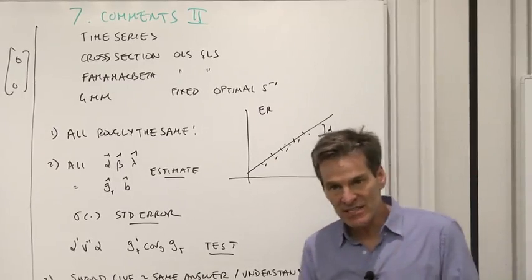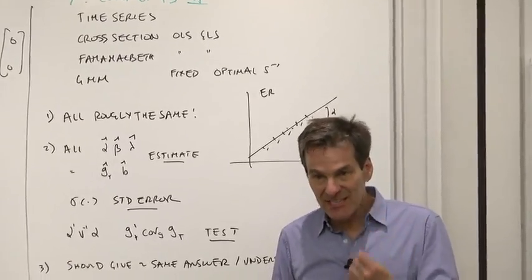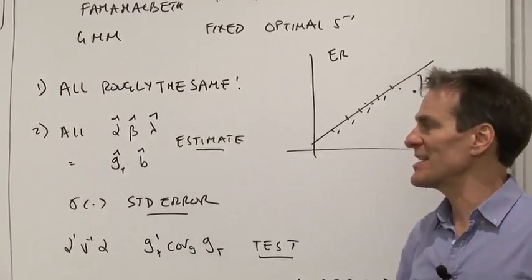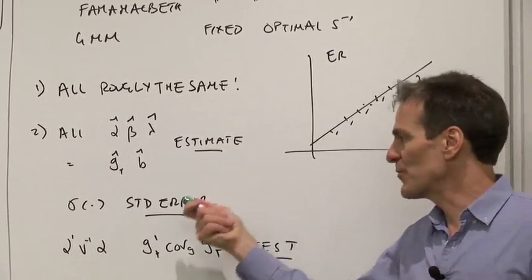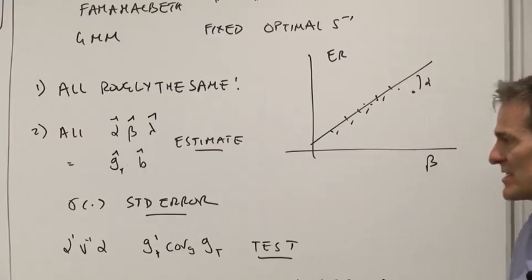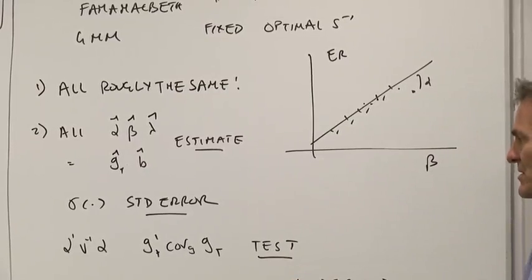In each case, we went through the standard statistical methodology. How do you produce your estimates? How do you produce formulas for the standard errors of the estimates to tell you some sense of sampling uncertainty?